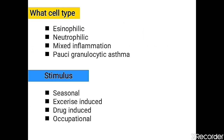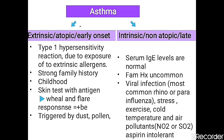Asthma is classified on the basis of cell type, stimulus, or extrinsic and intrinsic pathogenesis. By cell type: eosinophilic, neutrophilic, mixed inflammatory, and paucigranulocytic asthma. By stimulus: seasonal, exercise-induced, drug-induced, or occupational. The main classification is extrinsic atopic early onset, or intrinsic non-atopic late onset asthma.